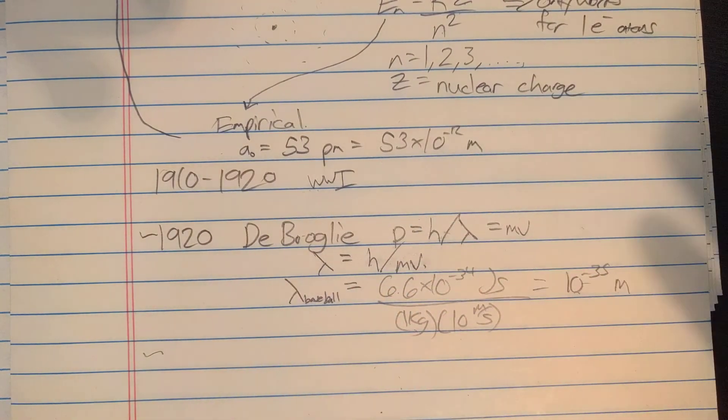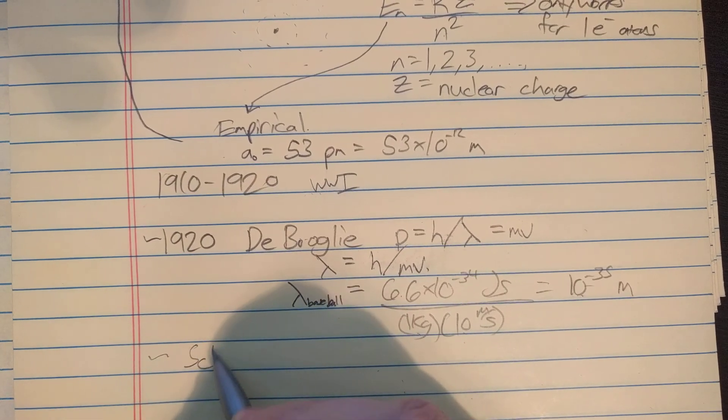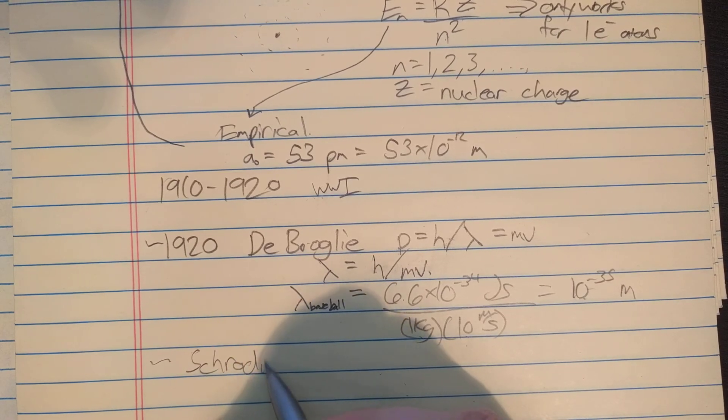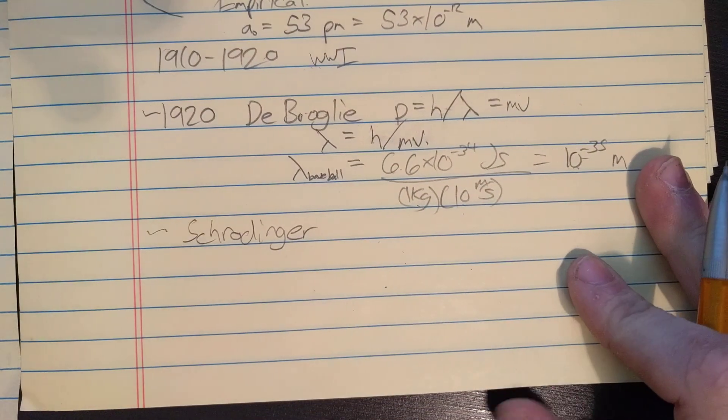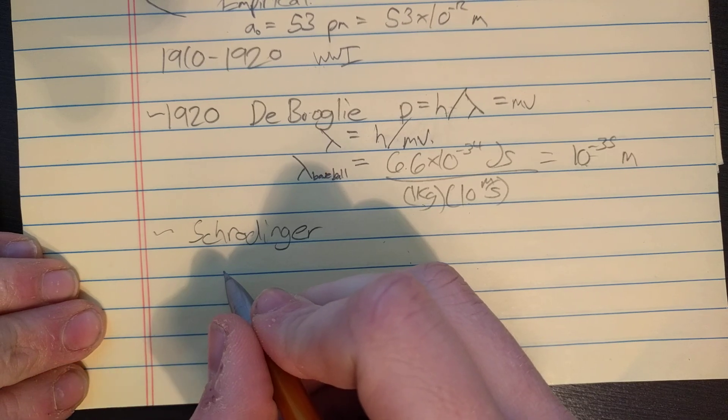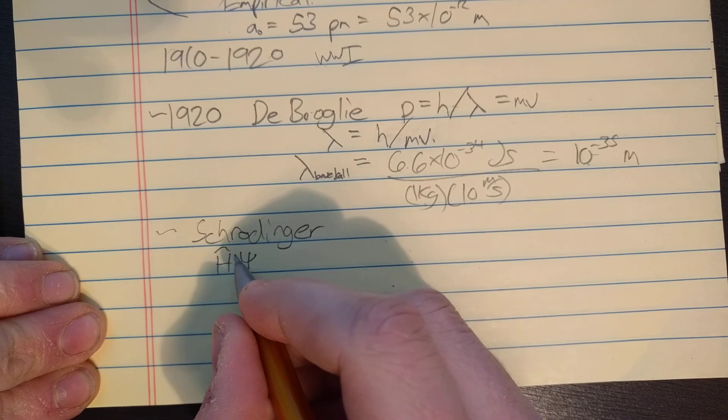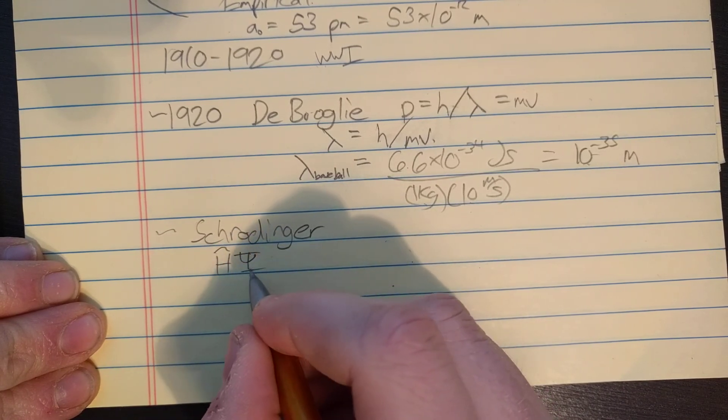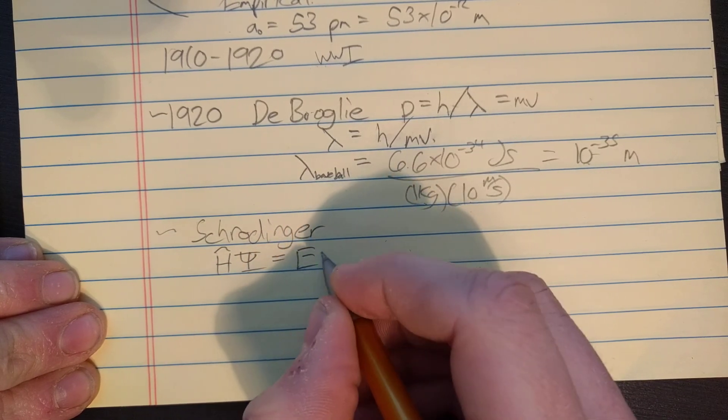Now is the beginning of what is called the New Quantum Theory. Really, the two scientists that the most credit is given to for developing the New Quantum Theory was Schrodinger and Heisenberg. I'll talk about Schrodinger first. Schrodinger wrote down this new equation, which was the Hamiltonian of what he called the wave function, psi, this is the Greek letter psi, is equal to the energy E times psi.